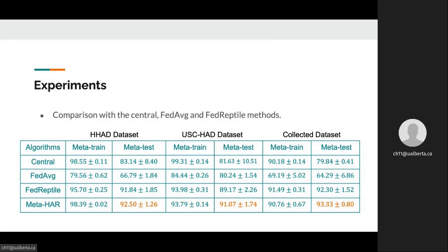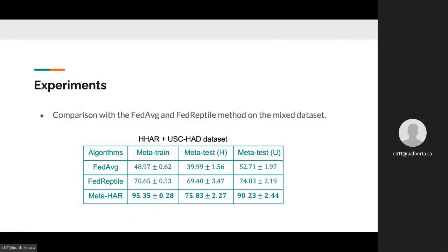On meta-test users, which do not participate in the meta-learning process, our method outperforms all baselines, including models trained centrally or the personalized model given by federated reptile. On the mixed dataset, where there is more heterogeneity in both label and signal distribution, our method outperforms federated averaging and the personalized model given by federated reptile by a much larger margin.